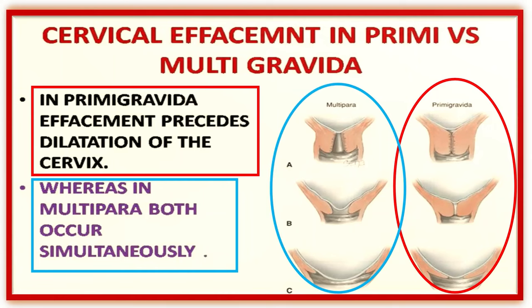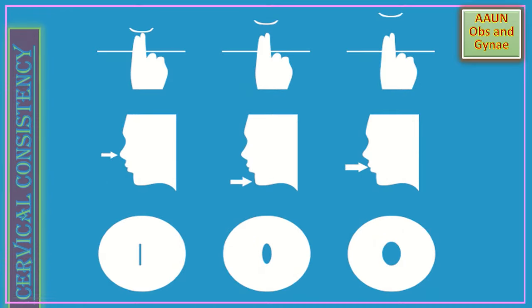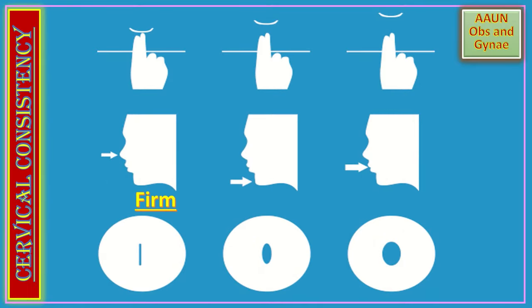Cervical consistency may be soft, medium, or firm. A hard cervix feels like the tip of the nose. Medium consistency feels like the chin. Soft consistency feels like the lips.